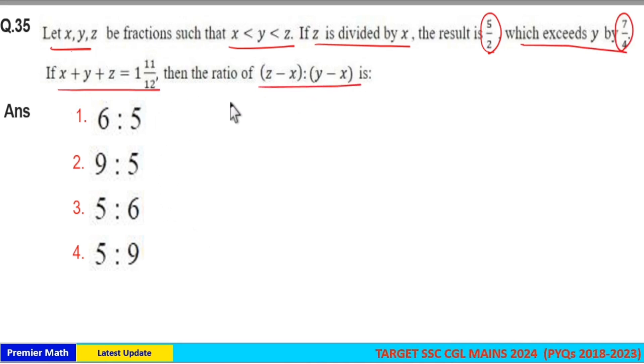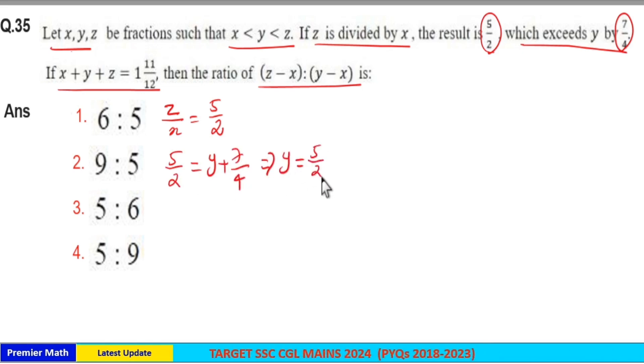Here z/x is given as 5/2, and 5/2 exceeds y by 7/4, which means y equals 5/2 minus 7/4. 20 minus 14 is 6, so 6 out of 8 is 3/4. Therefore y = 3/4.